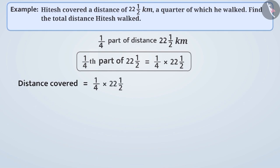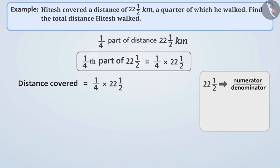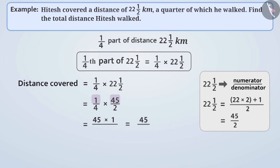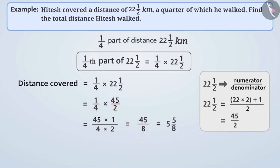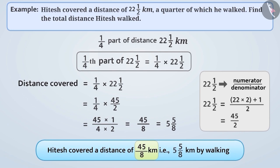We first convert 22 and a half to an improper fraction, giving 45 by 2. Now we multiply 1 by 4 and 45 by 2. Multiplying the numerators: 45 into 1 is 45. Multiplying the denominators: 4 into 2 is 8. The result expressed as the product of numerators divided by the product of denominators is 45 by 8. We can write this as 5 and 5 by 8. Hitesh covered 45 by 8 km, or 5 and 5 by 8 km, by walking.